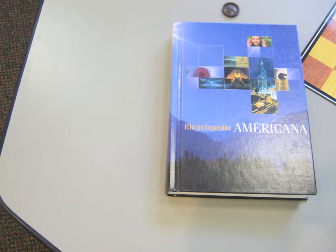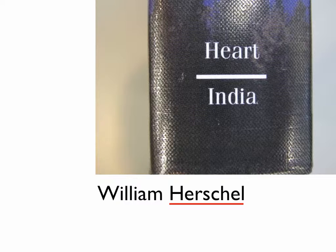We'll probably start with encyclopedias. I've got three or four sets. The set I've got here is the Encyclopedia Americana, which is about 30 volumes long. On the spine of the encyclopedia, it lets you know what's inside. This one has all the topics between Heart and India. Seeing how I'm looking up the scientist William Herschel, I'll look up his last name, Herschel, and he ought to be in here.